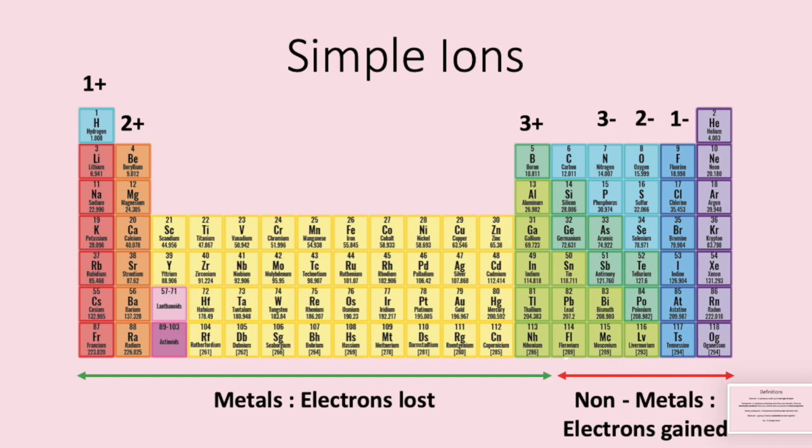On the other hand we have the non-metals. If we take nitrogen it's in group five of the periodic table. It needs eight electrons in its outer shell. Therefore it needs to gain three electrons. We say it's got a three minus charge. Chlorine is in group seven of the periodic table. It needs to gain one electron and has a one minus charge.